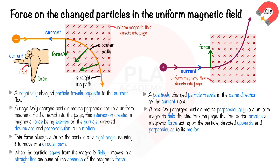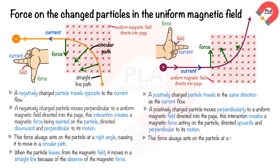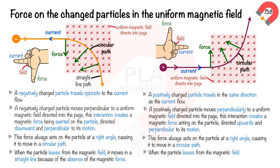Applying the Fleming left-hand rule, with your index finger pointing into the page along the magnetic field direction and your middle finger pointing to the right along the current direction, you see that your thumb points upwards, indicating the direction of force acting on the positively charged particle. This force always acts on the particle at a right angle, causing it to move in a circular path. When the positively charged particle leaves the magnetic field, it moves in a straight line because of the absence of the magnetic force.